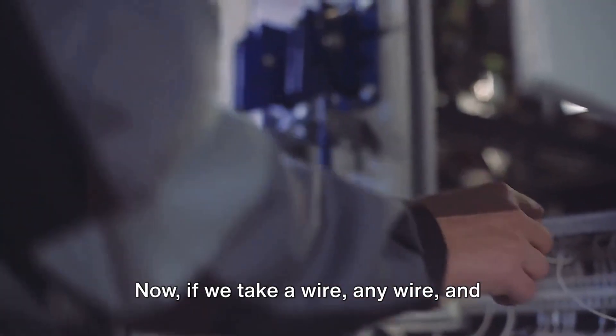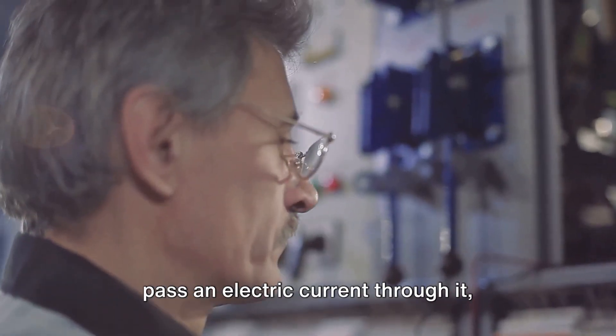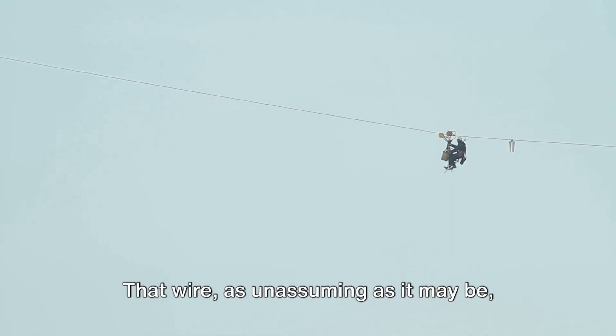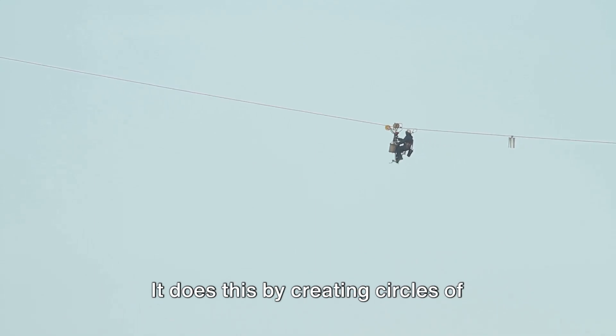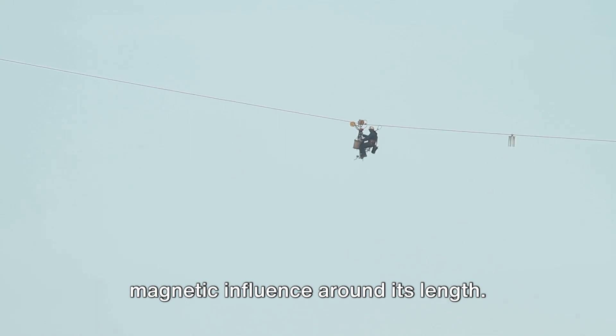Now if we take a wire, any wire, and pass an electric current through it, something incredible happens. That wire, as unassuming as it may be, begins to create a magnetic field around itself. It does this by creating circles of magnetic influence around its length.